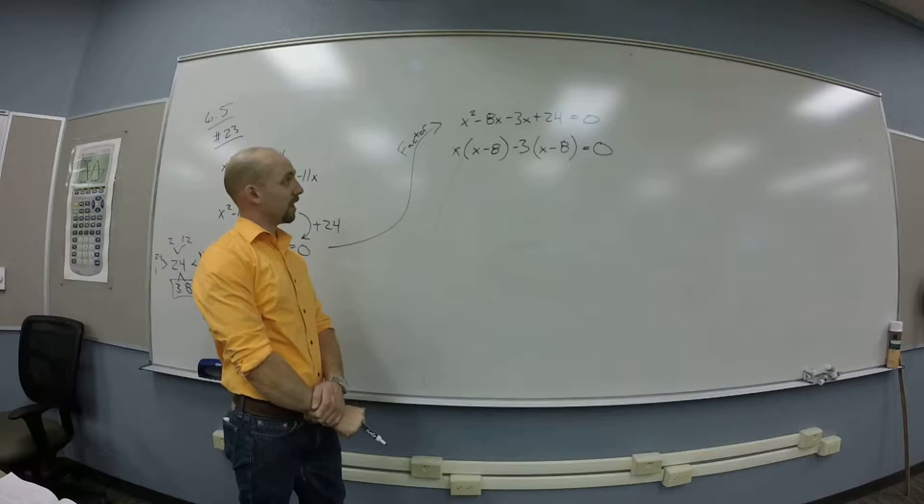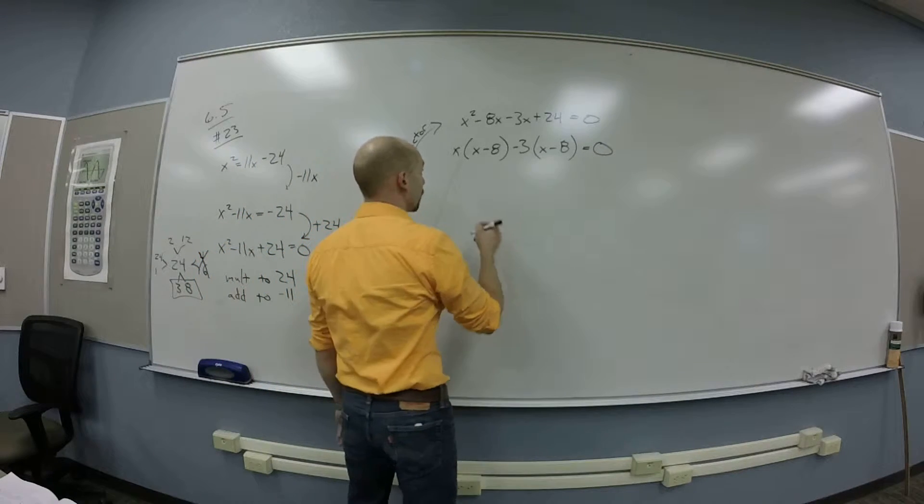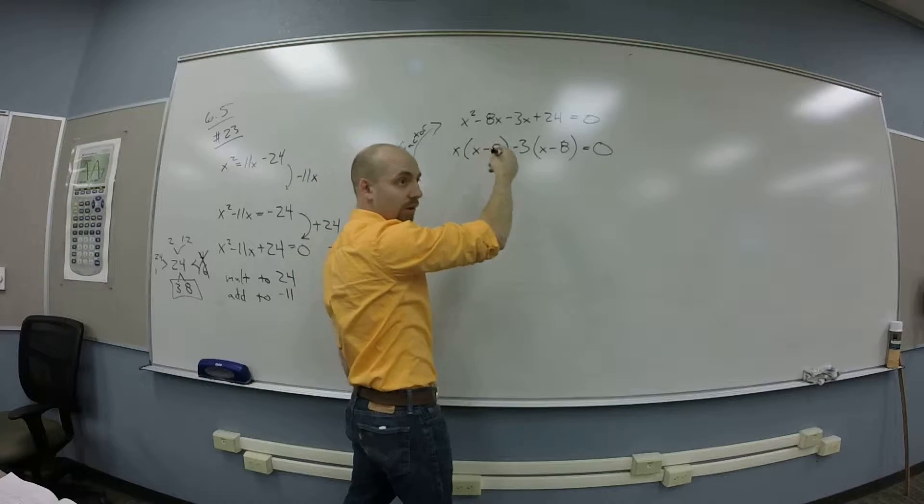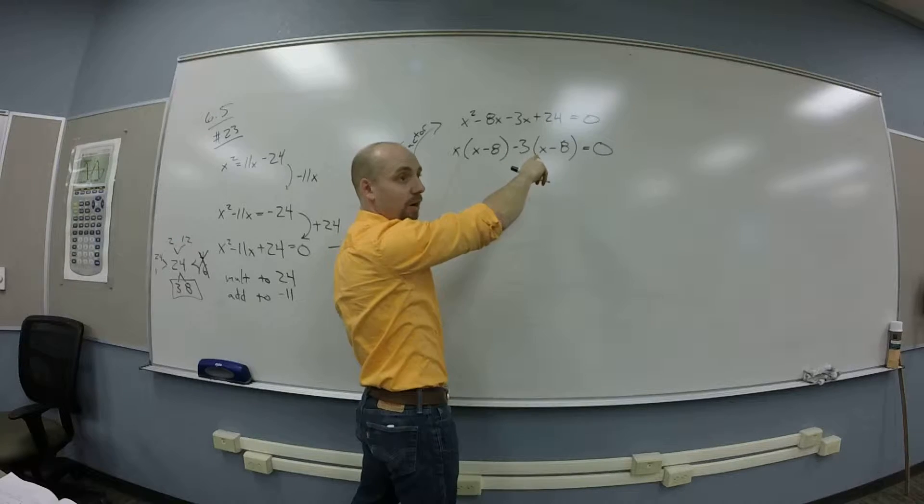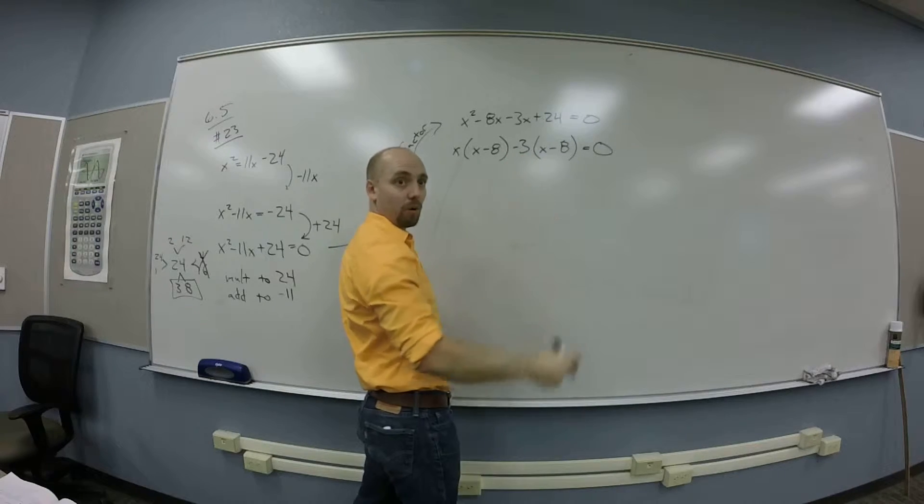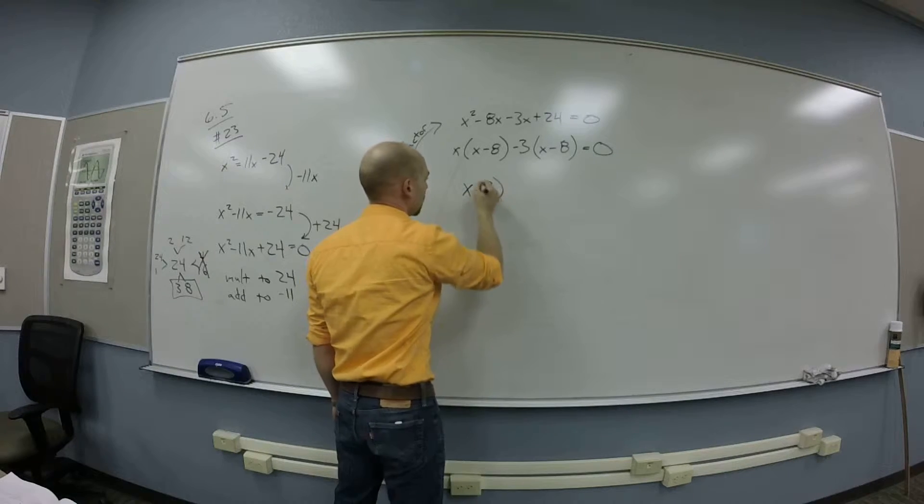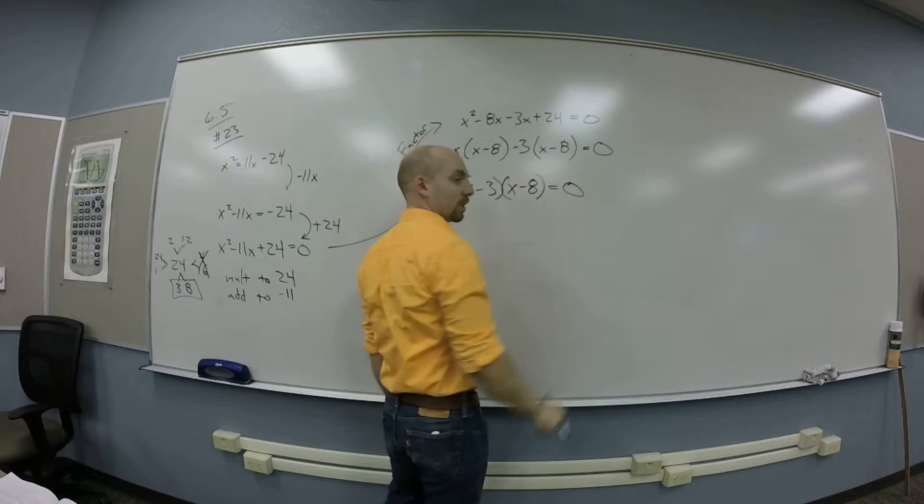Now, what can I factor out of this stuff on the left? An x minus 8. Yeah, there's an x minus 8 in both terms. Or I could think, okay, Jimmy brought x, whatever the heck an x minus 8 is to the party. And Susan ran off with three of them. So we're left with x minus 3, x minus 8. You guys see that?